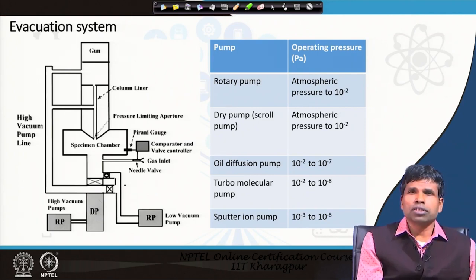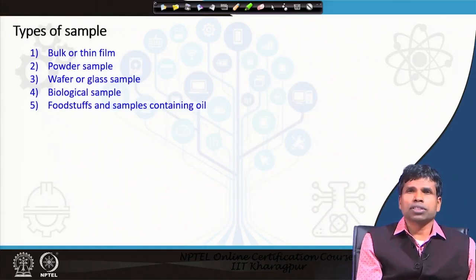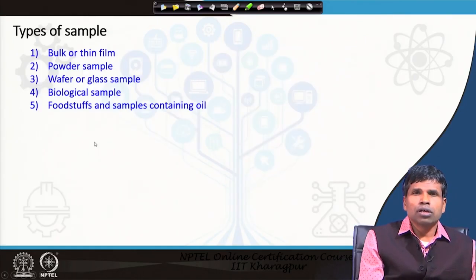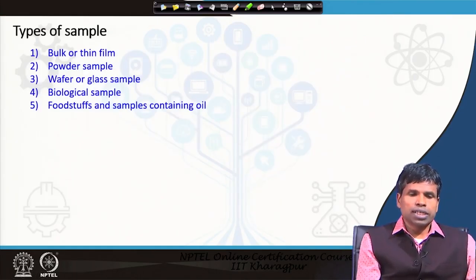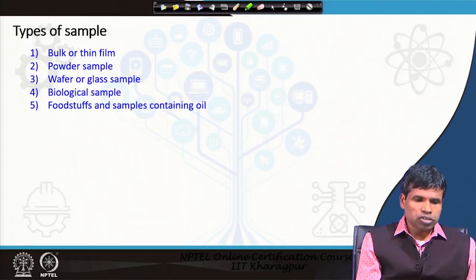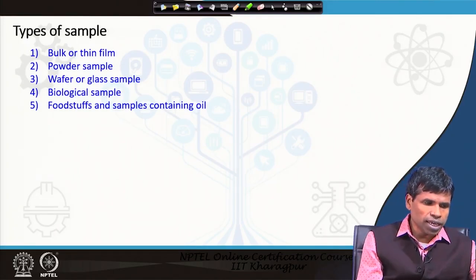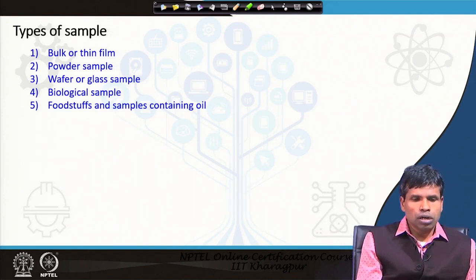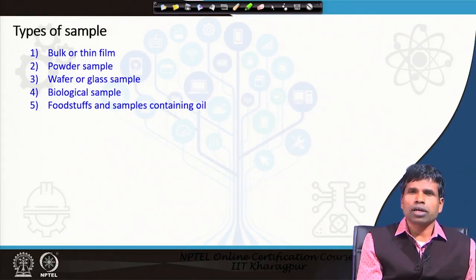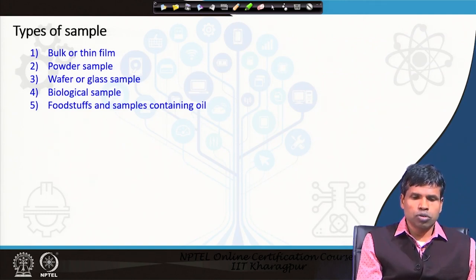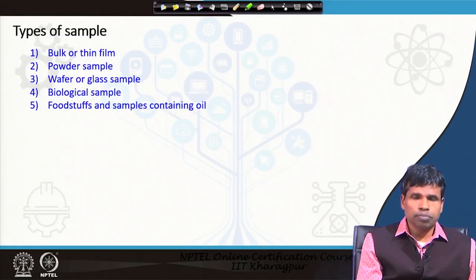Now, after discussing all these parts, we will move to the samples, because the sample is placed inside the specimen chamber. We can have different types of samples: bulk or thin film, powder form, simple wafer or glass slides, biological samples, or samples containing oil. For dry or hard samples preparation is much easier, but one must take special care for biological samples and food or oil-containing samples.